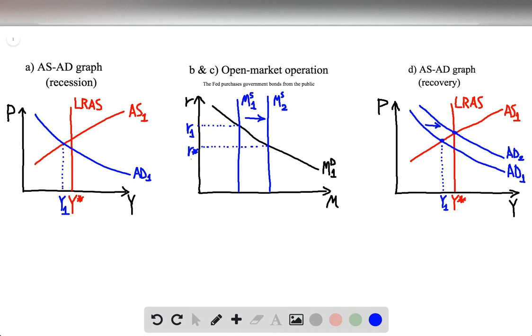In question 5, we're dealing with an economy that is in a recession with high unemployment and low output.